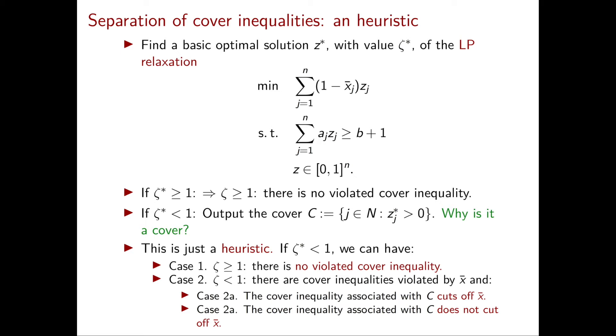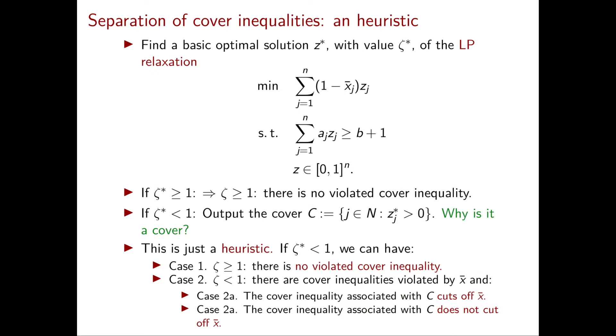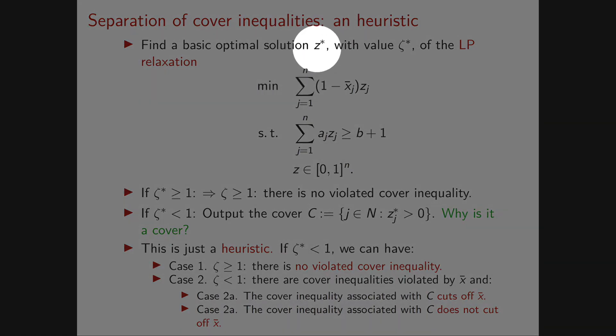What is the first thing we always do if we're not able to solve an integer programming problem? We just take its standard LP relaxation. This is exactly the standard LP relaxation of the problem we've just written. Let's denote a basic optimal solution by z* and the optimal value by ζ*.